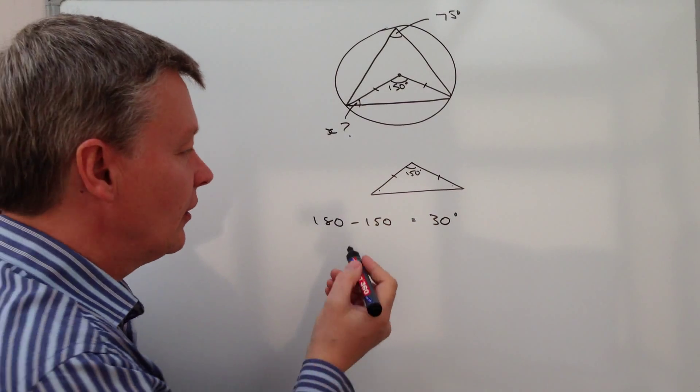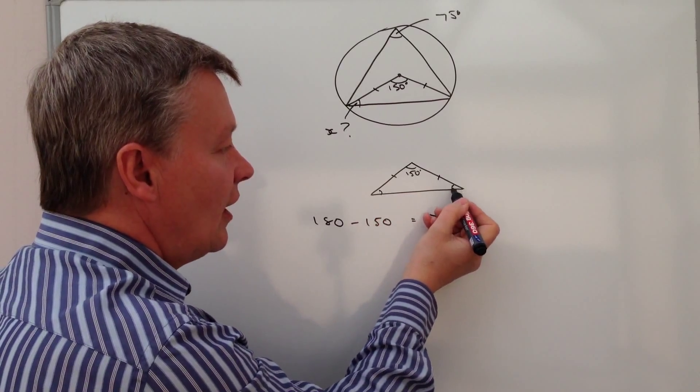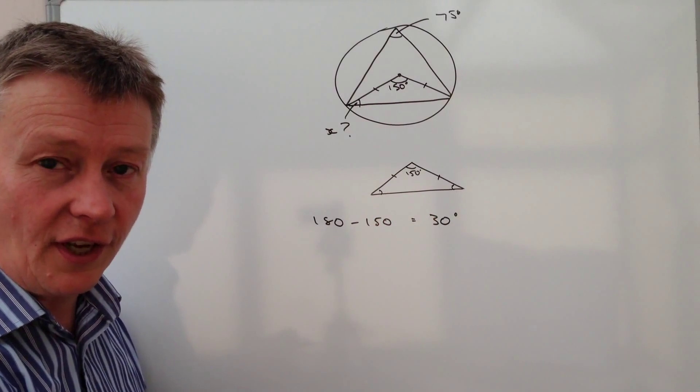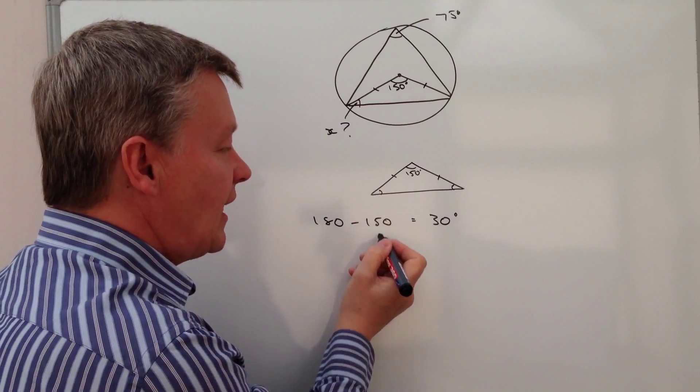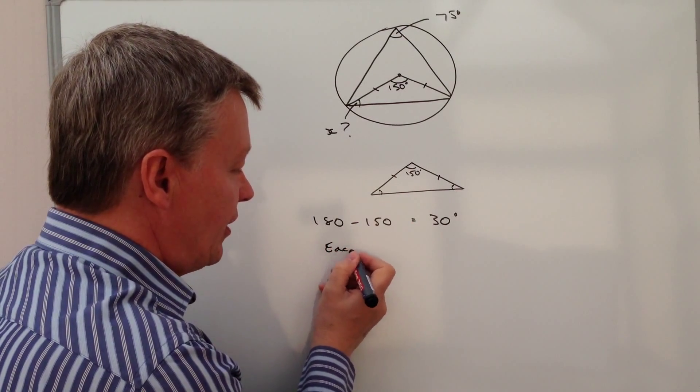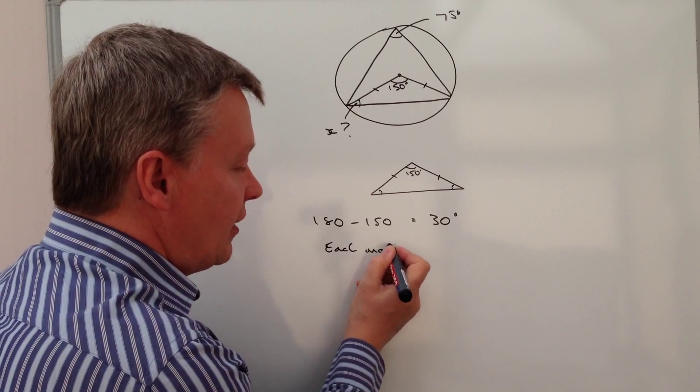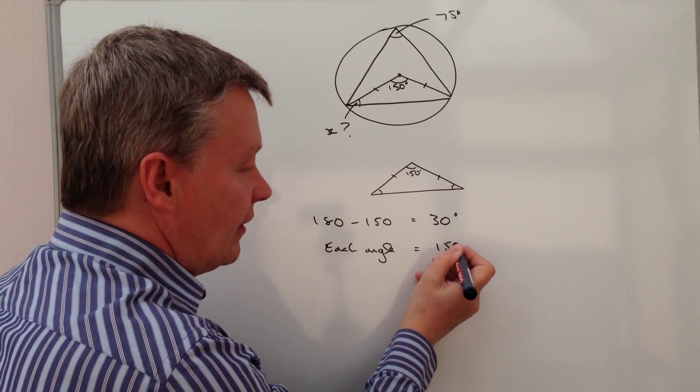Because this is an isosceles triangle, it means that this angle and this angle are exactly the same. Well, if they total 30 degrees, it must mean that each angle must equal 15 degrees.